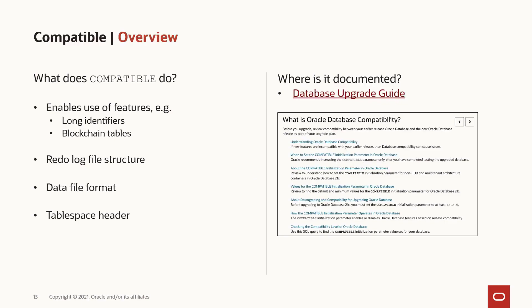But what does the compatible parameter actually do? Its most important job is to restrict the use of new features. For instance, we introduced long identifiers in 12.2, and in order to use that new feature to give your table a very long name — around 128 bytes — you would need to raise the compatible parameter. Blockchain table is another example of something that requires a change to the compatible parameter.